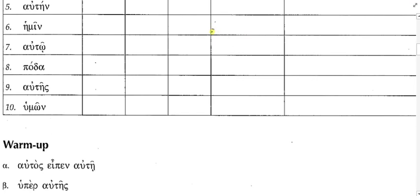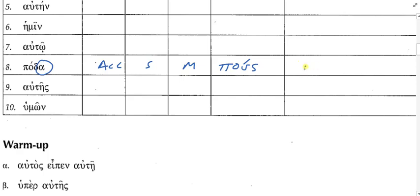Can I have you look at number eight real quickly, since it's one of our newer words. What is the lexical form for 'poda'? It's 'pous'. What declension pattern does it follow? Third. What gender is it? Masculine. So if I know that's a third declension form, the case ending means it's got to be accusative singular. How am I going to translate this? Just 'foot' — like as a direct object. 'Pous' becomes 'poda'. I slammed my foot in the door — 'poda mou'.